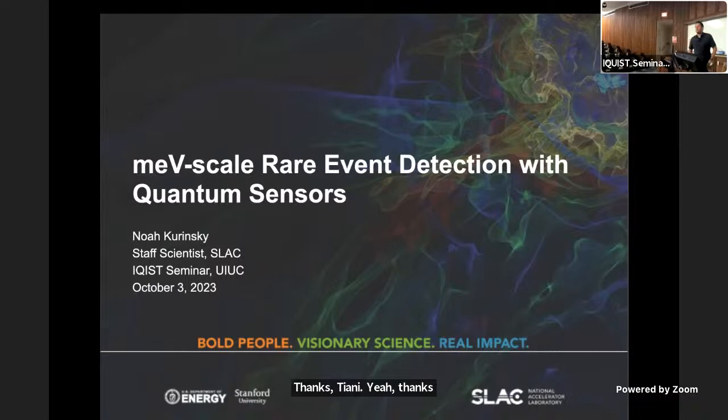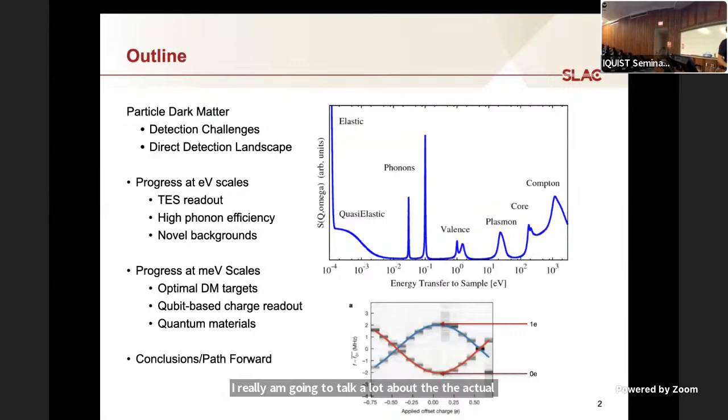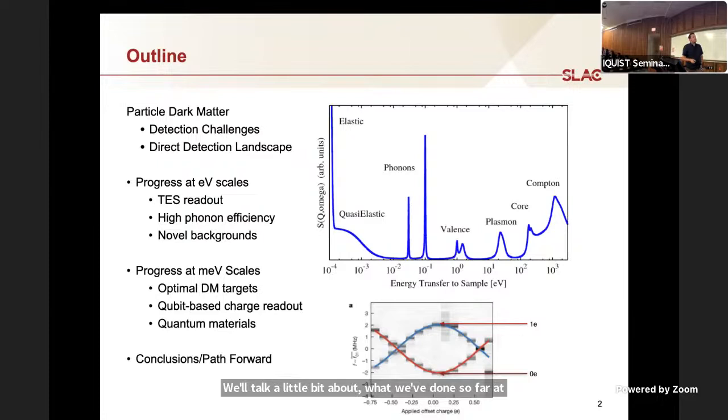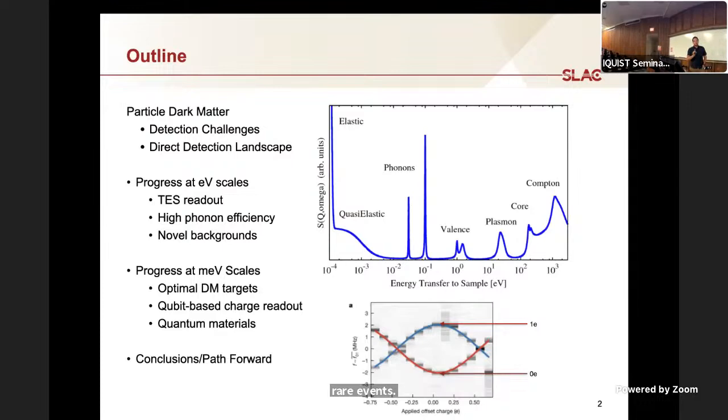I'm not going to talk that much about dark matter. I really am going to talk a lot about the actual strategies that we use to look for it. I'll spend like three or four slides giving enough intro on dark matter so you can understand the magnitude of the measurement problem. We'll talk about what we've done so far at EV scales and then how we go to the milliEV scale, what I like to call the single quasi particle scale for quantum sensing, specifically in the context of very rare events, not pump probe experiments or bolometry, but looking for a few events per day.